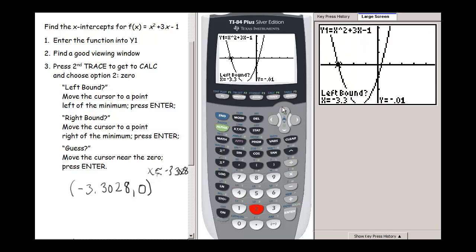It asks me for the left bound, so I need to be closer over here. I'm going to move my cursor closer to my x-intercept but stay to the left of it. I'm closer to it now but definitely on the left side. I'm going to press ENTER.